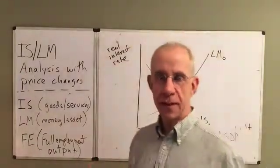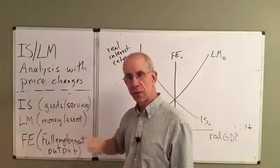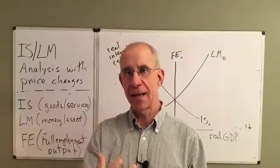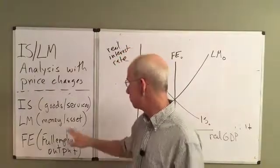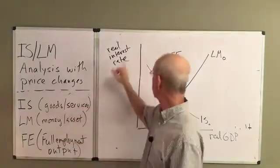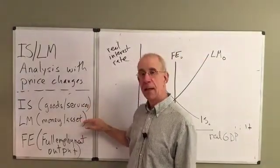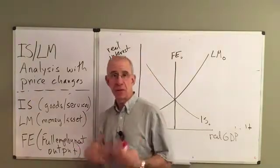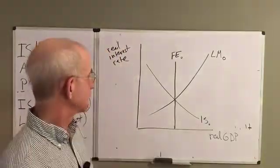Let's put these three curves together — the IS curve, the LM curve, and the full employment relationship — into the same graph so that we can start to analyze changes that might take place in an economy. The IS curve represents combinations of interest rates and output where the goods and services market is in equilibrium. The LM curve is where the money market and asset markets more generally are in equilibrium. And FE shows us the full employment level of output, essentially where the labor market is in equilibrium.